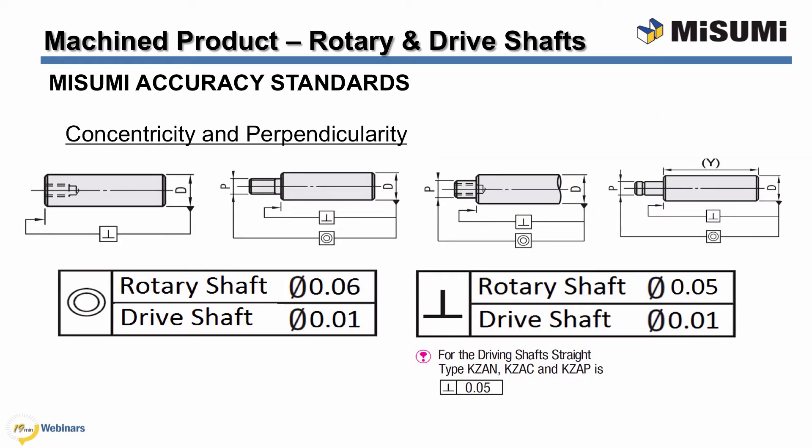Also measured are the concentricity and perpendicularity of the shafts. As per the diagrams, the perpendicularity tolerance measures the shaft's length against the end face surface of the larger diameter. The deviation should not exceed 0.05 millimeters for rotary shafts and 0.01 millimeters for drive shafts. The concentricity tolerance measures the difference between the circularity on the different steps of the rotary shaft and ensures the step is centered properly. An eccentric step is not ideal for smooth operation as it will cause the shaft to rotate off center. Rotary shafts have a concentricity tolerance of 0.06 millimeters and drive shafts 0.01 millimeters.